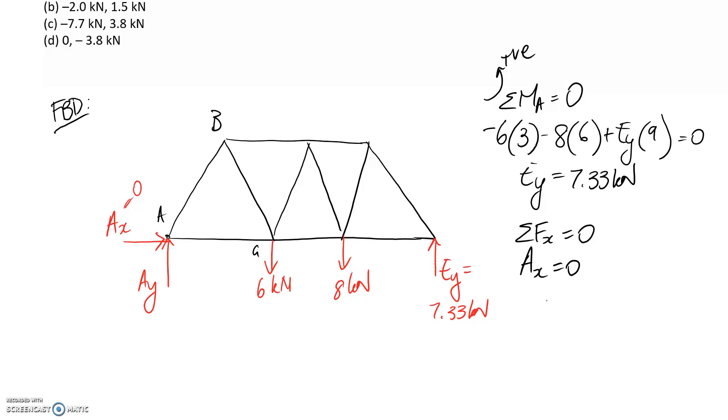And now if I sum forces in the Y direction, I'm going to get Ay going up, so it's positive. Six and eight going down, so they're negative. And then Ey we know is 6.33 up. So we can solve for Ay. It comes to 6.67 kilonewtons.